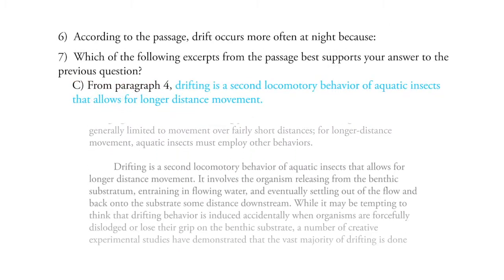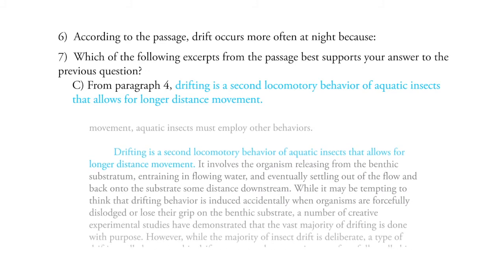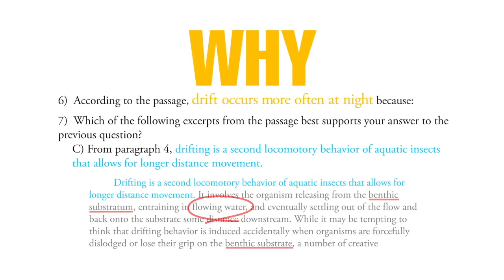Choice C is in paragraph 4, which is about drifting. But this excerpt is just stating that drifting is the second locomotory behavior of aquatic insects that allows for longer distance movement. What follows is more of a description of how insects drift on water and the benthic substrate — nothing about why drift occurs more at night. So choice C is out.